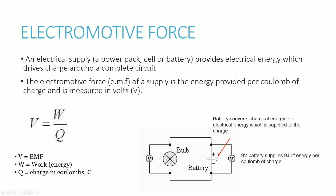EMF is always to do with the supply of electrical energy — whatever is providing the electrical energy for the circuit, whether a power pack, cell, or battery. To put it simply, a battery converts chemical energy into electrical energy, which is then supplied to the charge that flows around the circuit. So a 9-volt battery essentially means the battery supplies 9 joules of energy per coulomb of charge, which allows it to drive the charge around the circuit.